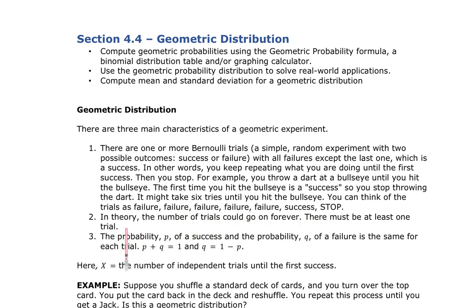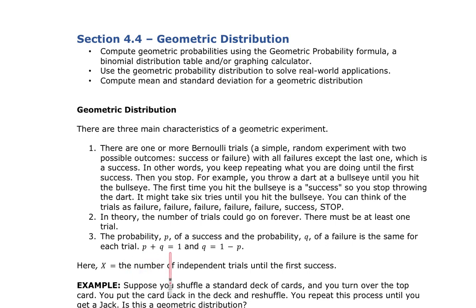In theory the number of trials could go on forever, but there must be at least one trial. The probability P of success and the probability Q of failure is the same for each trial, so P plus Q should equal one. In other words, Q equals one minus the probability of success.